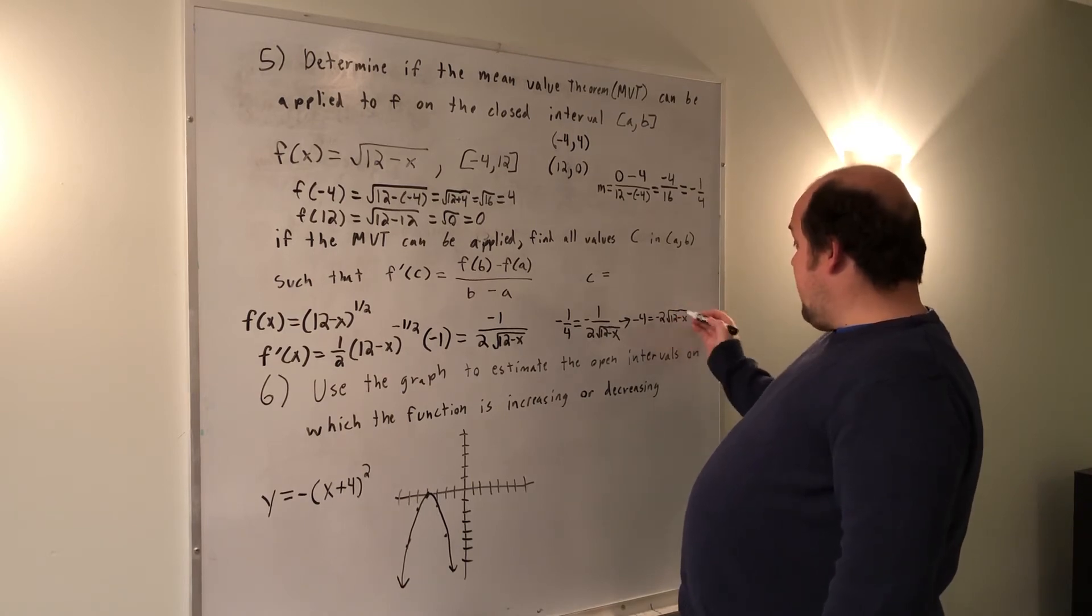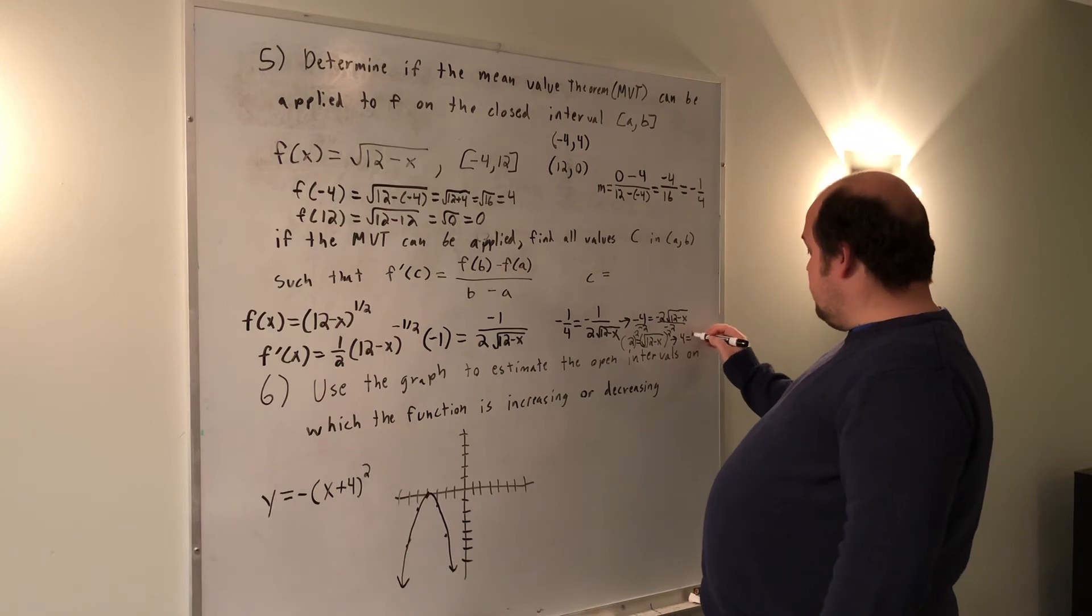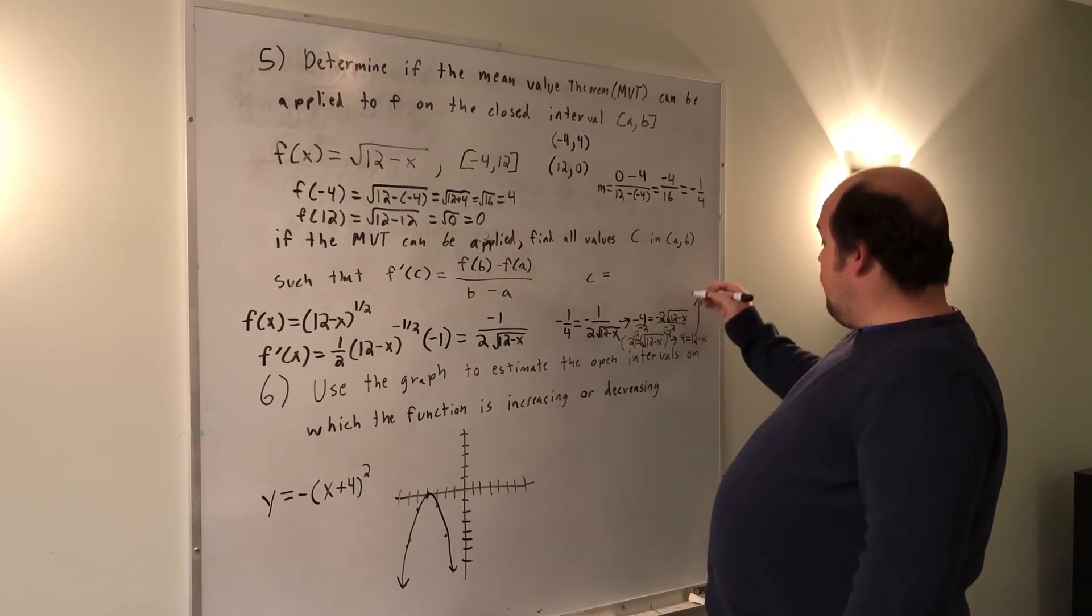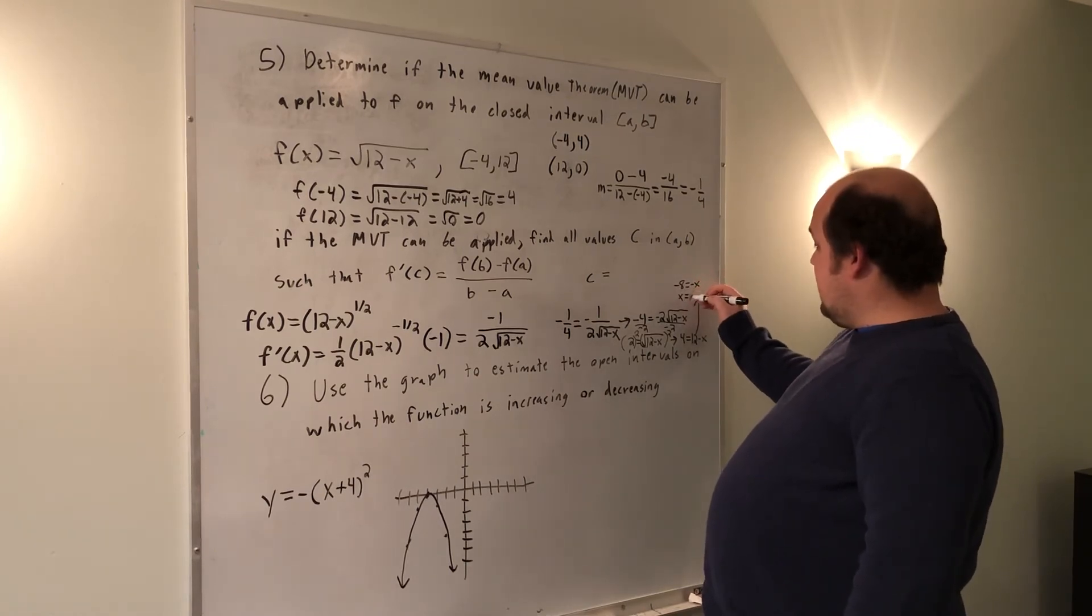Next step, I'm going to divide both sides by negative 2. Then I get 2 equals the root of 12 minus x. If I square both sides, then I get 4 equals 12 minus x. Last step, subtract 12 from both sides. That's going to give me 4 minus 12 is negative 8 equals negative x, which means x equals 8.